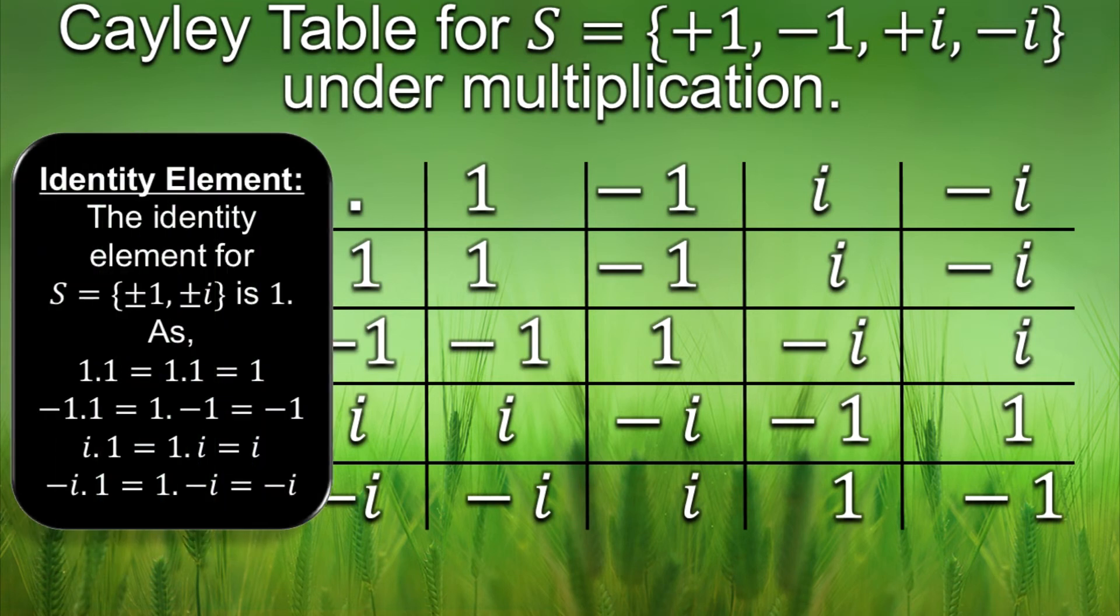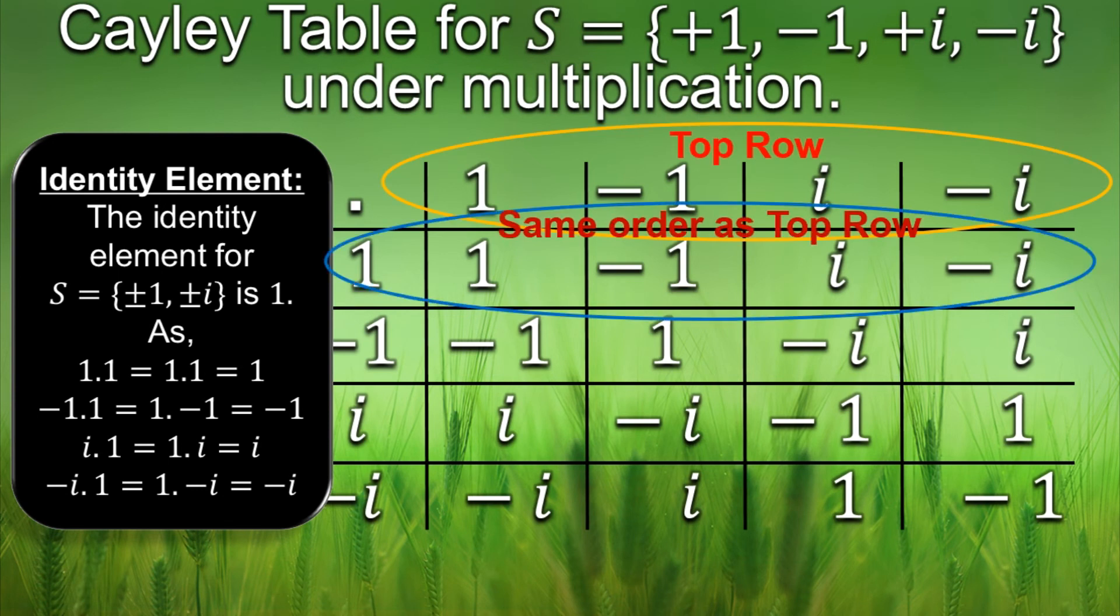The third axiom is existence of identity element. We need to find the row that has the elements of the set in the same order as they are written in the top row. And the element corresponding to that row is the identity of that set. You can also do the same for columns as well. So 1 is the identity element here and we have shown that on multiplying it with every other element of the set we get that element again.